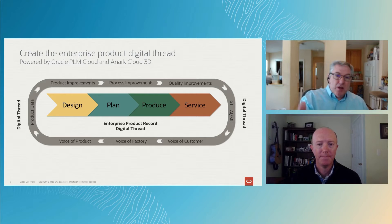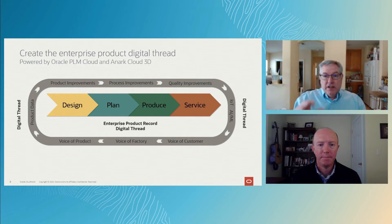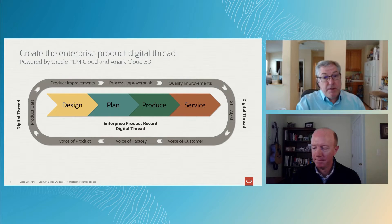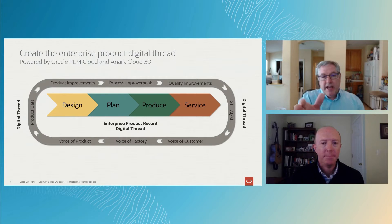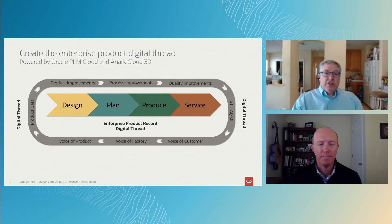You want a more integrated flow from design into planning, into manufacturing, into service — you want that digital thread created to manage that entire flow. We've got connected digital devices and manufacturing equipment, so IoT is going to play a big role in providing that feedback loop, with AI and machine learning giving us additional information on things like predictive maintenance. The voice of the customer, the voice of the factory, the voice of the product has to flow back and forth. It's the combination of Oracle PLM Cloud and Manufacturing Cloud with Anarch providing this model-based enterprise, or 3D-enabled supply chain.